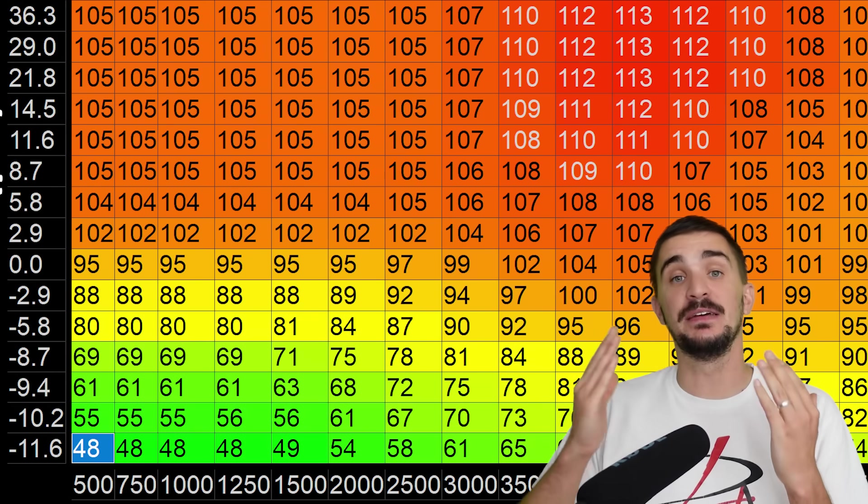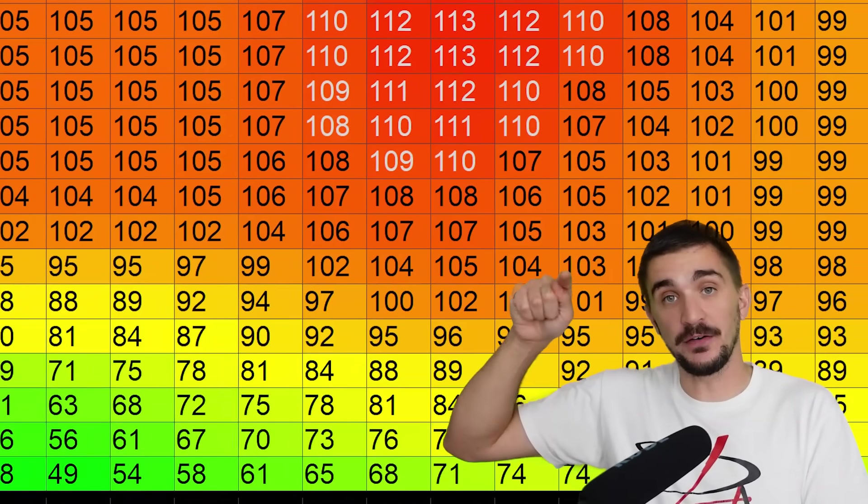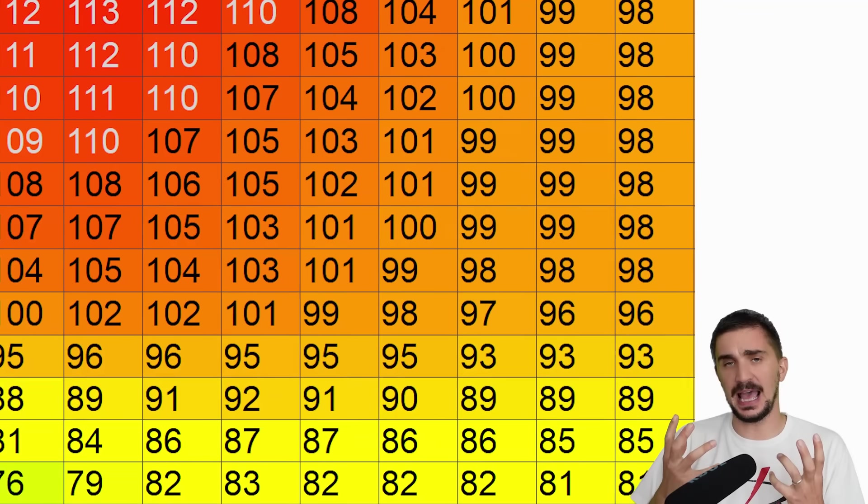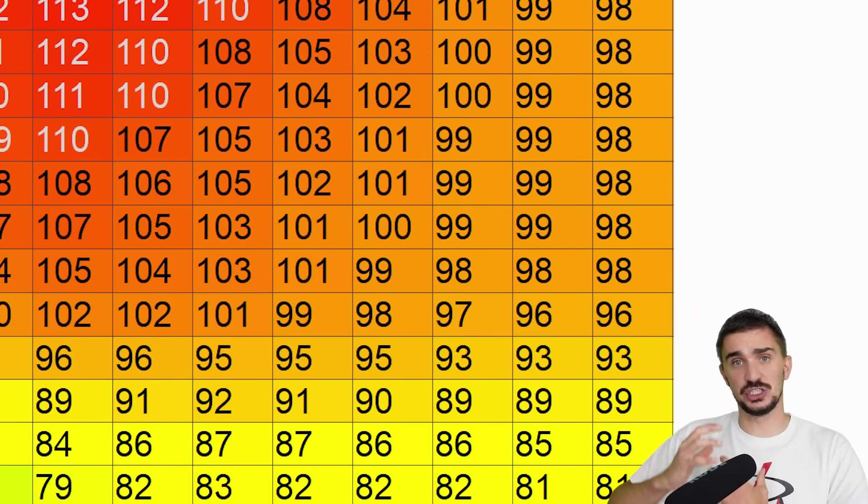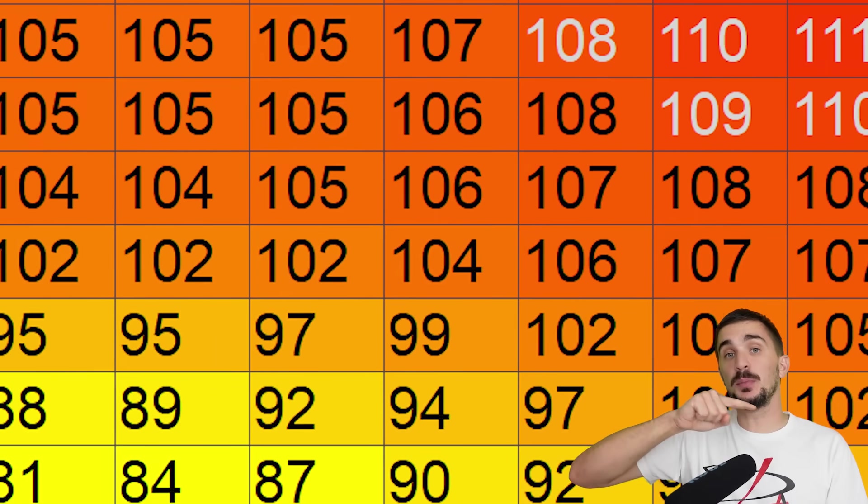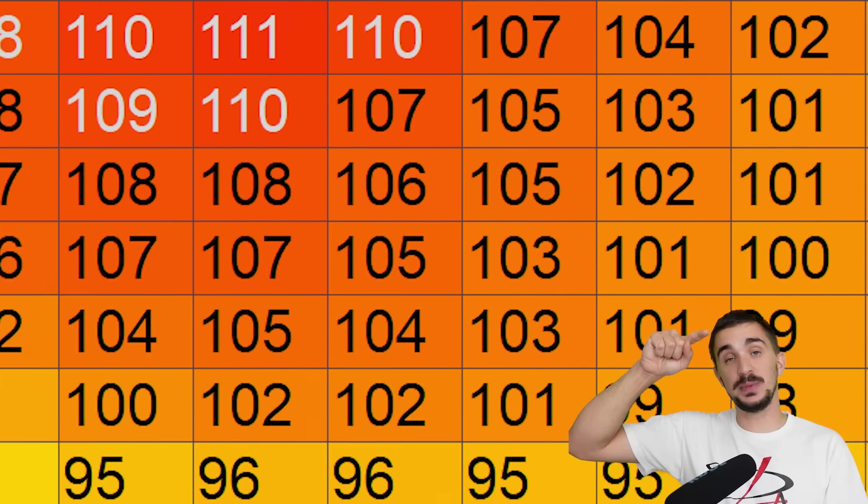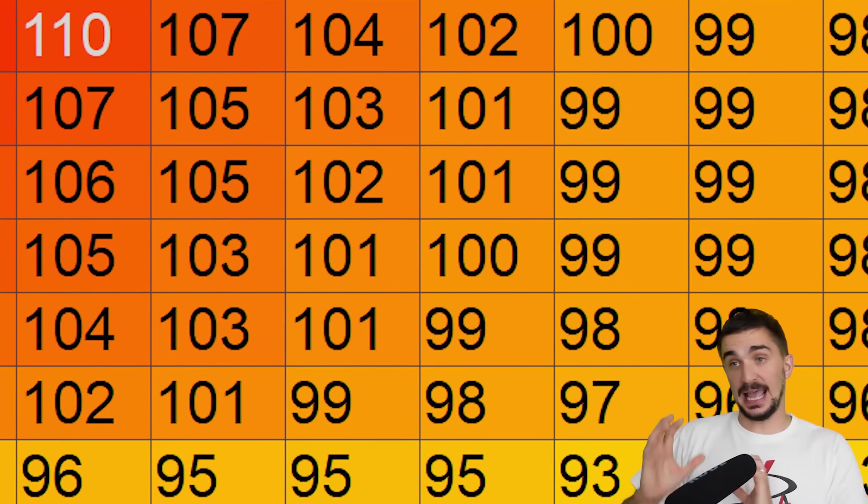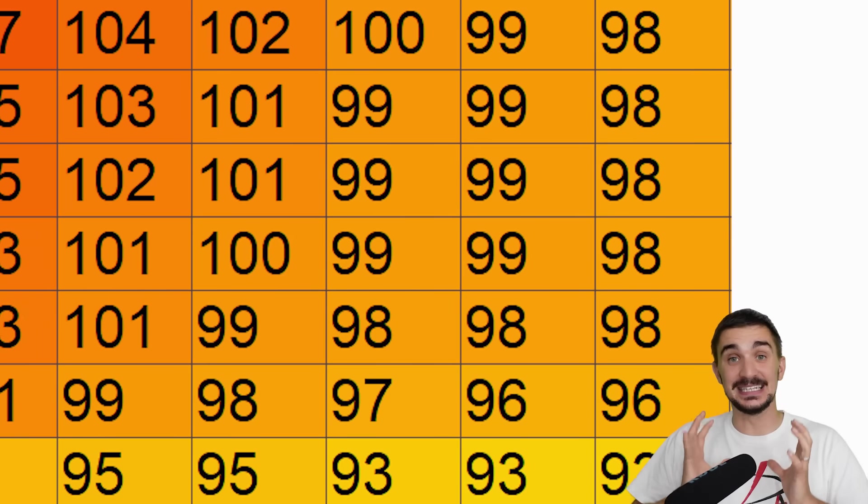Now something else you might have noticed is that VE actually falls off at high RPM. It gets reduced. Why does this happen? Shouldn't volumetric efficiency increase with RPM? Well, yes it does, but up to a point. As you can see it increases with RPM, but then at overly high RPM it falls off.